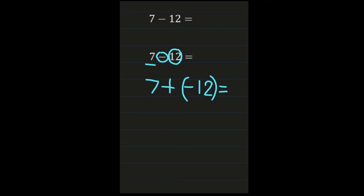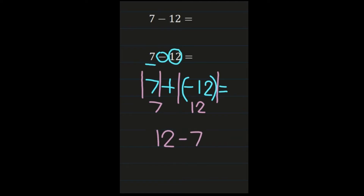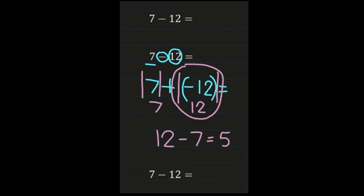So now we have an addition problem. We're adding integers with two different signs, so we're going to follow our addition rules. We take the absolute value of seven, which is seven, and the absolute value of negative twelve, which is twelve. When adding integers with different signs, we subtract our absolute values. So twelve minus seven equals five. We go back to the number with the largest absolute value, which was our negative twelve, so our answer is negative five. Seven minus twelve is negative five.